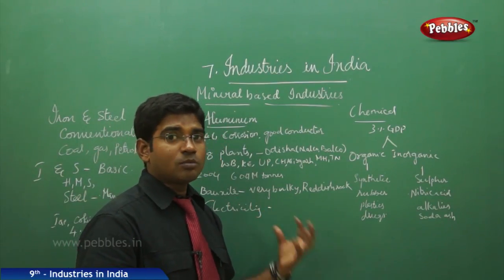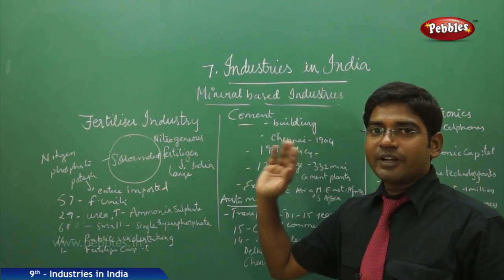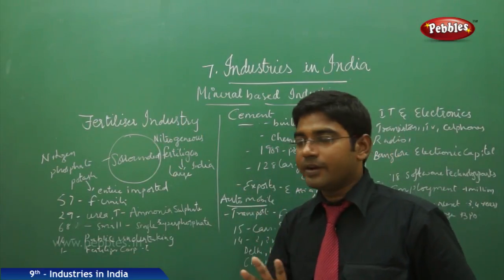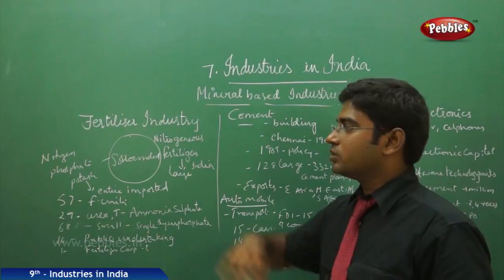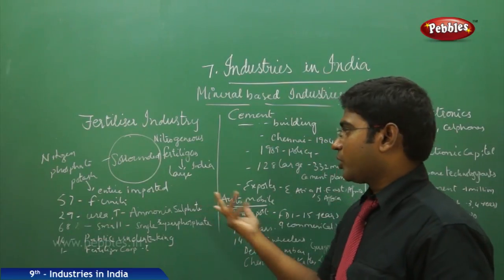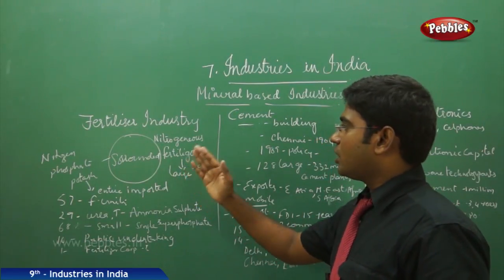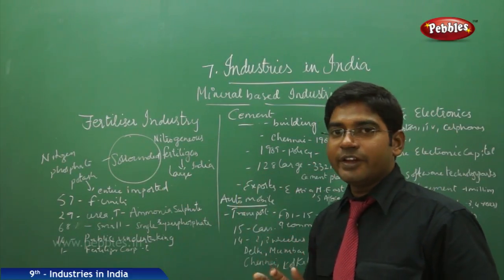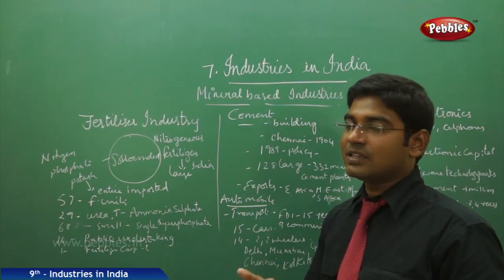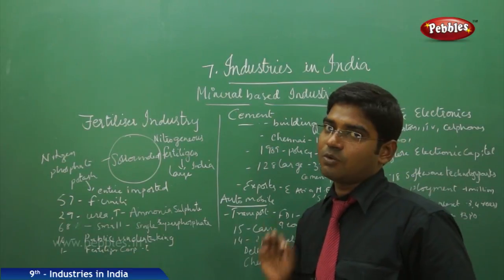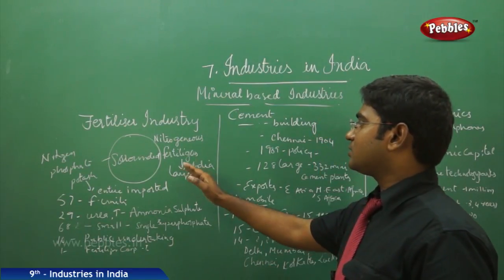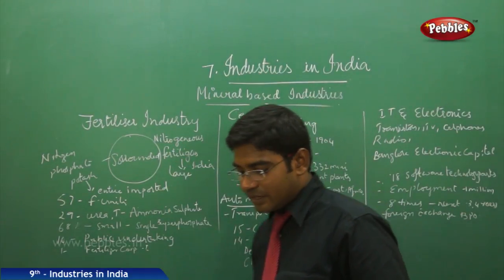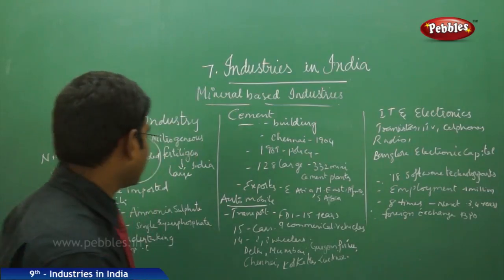Regarding fertilizers, these industries are located at places where nitrogen, phosphate, and potash are available. Nitrogen and phosphate are available in large quantities, but potash needs to be entirely imported — it is the third largest import for India. India stands in a very good position in large-scale production of nitrogen fertilizers.